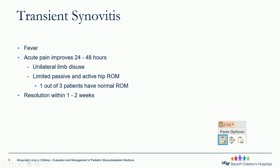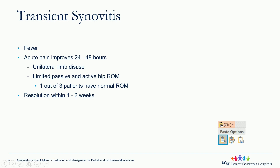In a neonate particularly, you will see unilateral limb disuse and possibly poor feeding as well. There's usually limited passive and active range of motion of the hip, although one out of three patients on average can have normal range of motion. The typical course is one to two weeks until resolution of symptoms, though sometimes it can take a little longer.